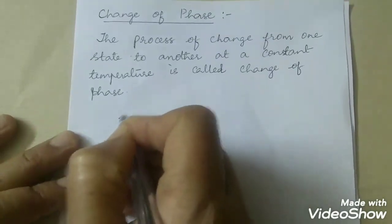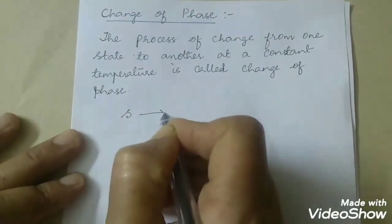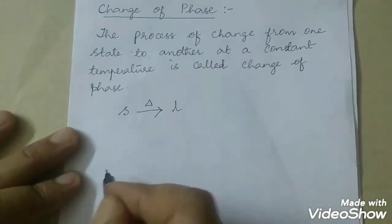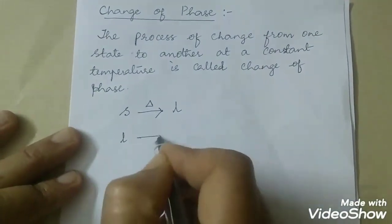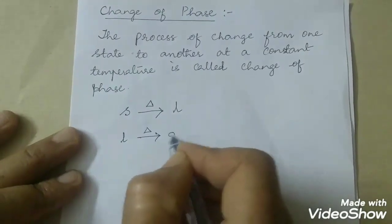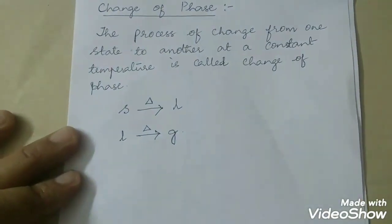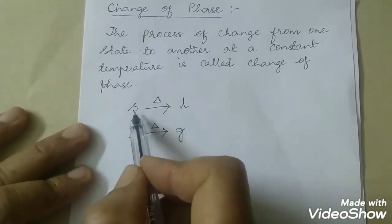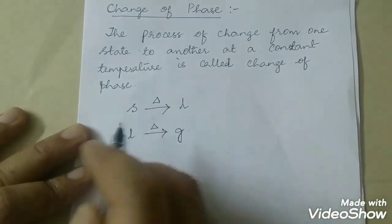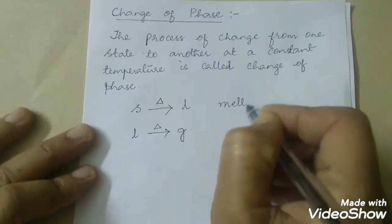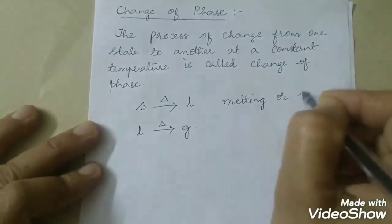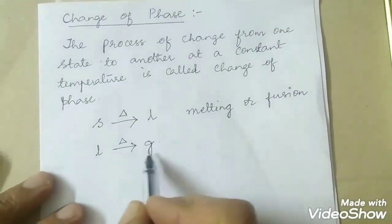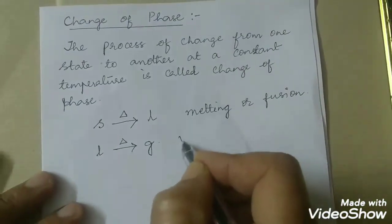We all know that a solid when heated changes to liquid, and a liquid when heated changes to gas. The process wherein a substance changes from solid state to liquid state is called melting or fusion. The process wherein a liquid changes to gas is called vaporization.